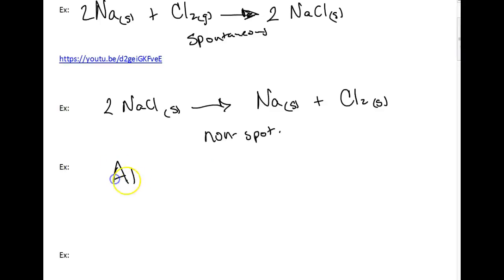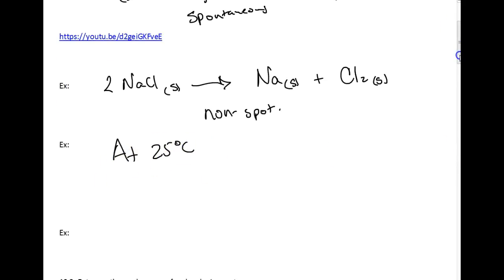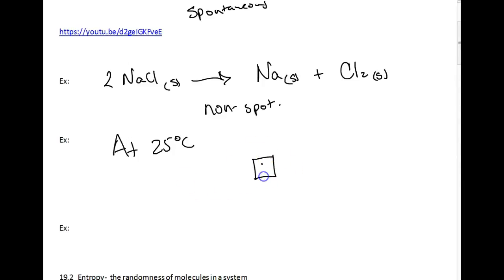I'll give you a couple of other examples of spontaneous reactions. Let's say if we were at 25 degrees Celsius, which is room temperature, and we had a block of H2O in a solid form, ice. We're at 25 degrees Celsius. We know that the melting point for water is zero degrees Celsius. So we're above its melting point at 25 degrees Celsius. So we're going to expect over time we're going to have a nice little puddle of H2O liquid.